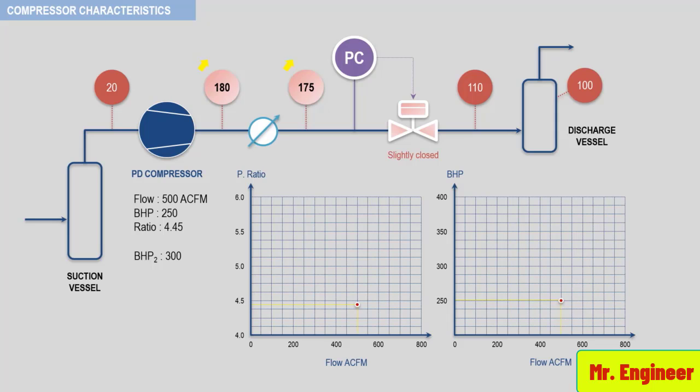First, we calculate the new pressure ratio. Recall that it is equal to the discharge pressure of the compressor divided by its suction pressure, and both pressures must be expressed in absolute pressure. So here, the new ratio is equal to 180 psi gauge pressure plus 14.7 to convert it to absolute pressure, divided by the suction pressure of the compressor which is unchanged in our case here and equal to 20 psi gauge pressure, so plus 14.7 to convert it to absolute pressure. And the new ratio is equal to 5.6.